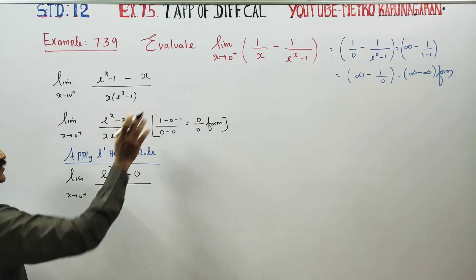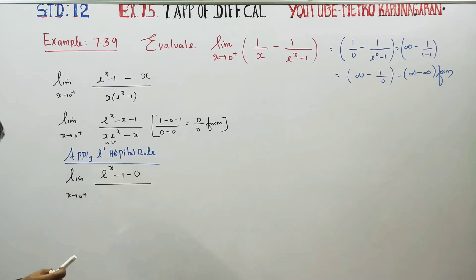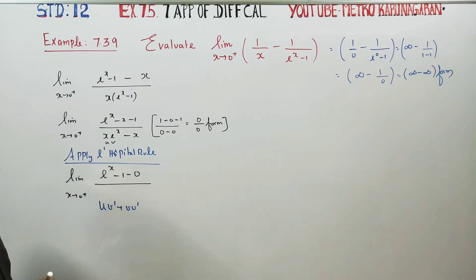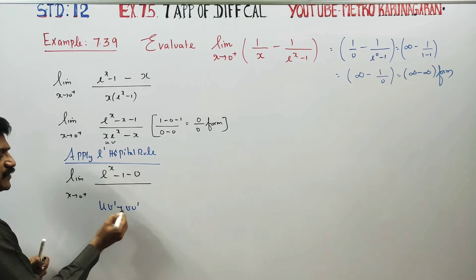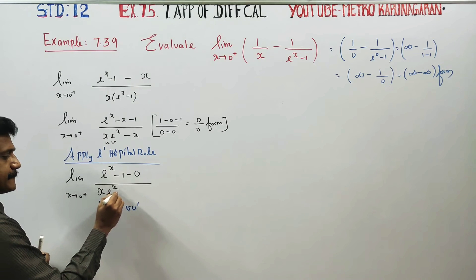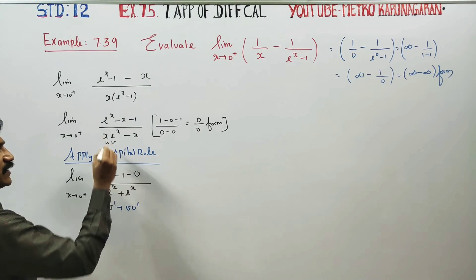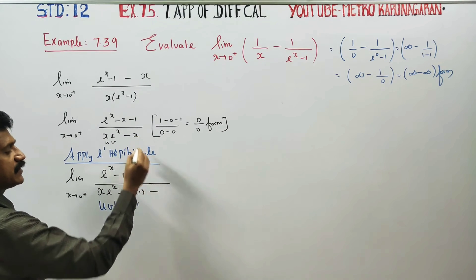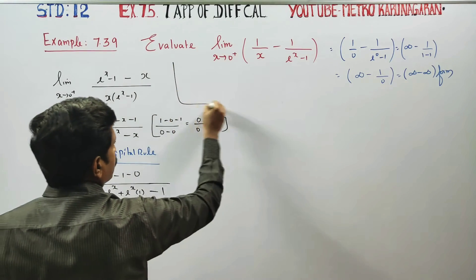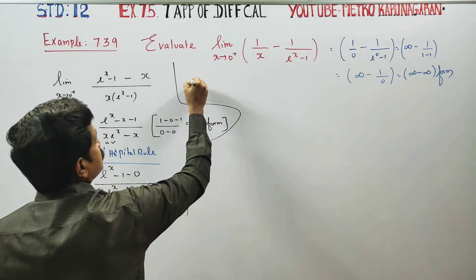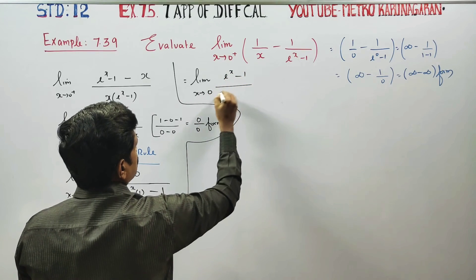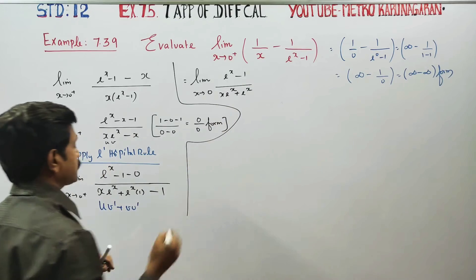Differentiating: the numerator e power x minus x minus 1 gives e power x minus 1. The denominator x into (e power x minus 1) requires the product rule (UV formula). u differentiate v plus v differentiate u: x is 1, and e power x differentiates to e power x. So the result is: limit x tends to 0 plus of (e power x minus 1) divided by (x·e power x + e power x minus 1).